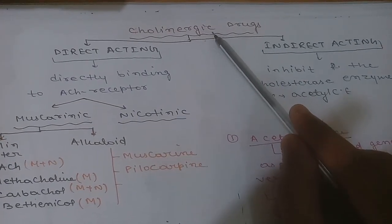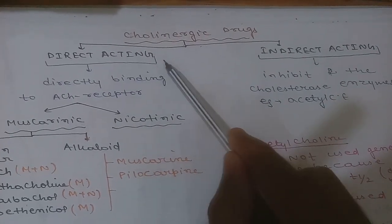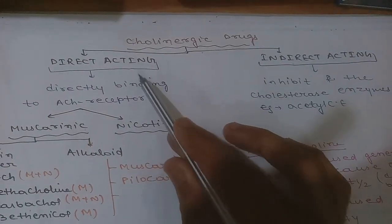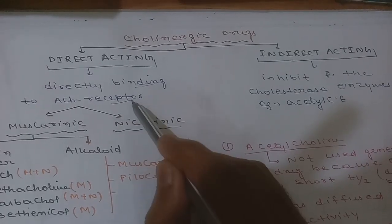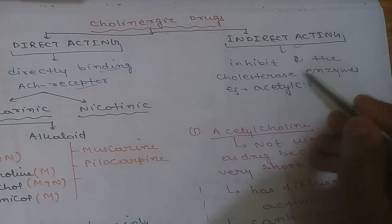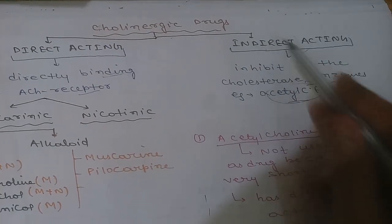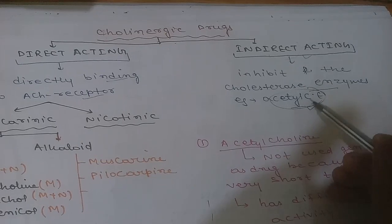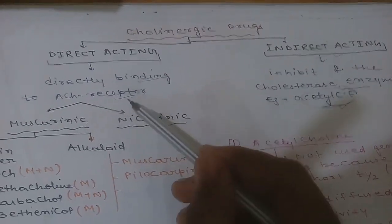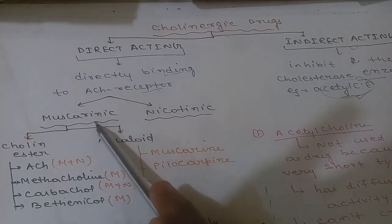Cholinergic drugs are divided into two groups: directly acting cholinergic drugs and indirectly acting cholinergic drugs. Directly acting cholinergic drugs directly bind with acetylcholine receptors, whereas indirectly acting cholinergic drugs inhibit the cholinesterase enzyme, thus increasing cholinergic activity. Directly acting drugs stimulate acetylcholine receptors, which are of two types: muscarinic receptors and nicotinic receptors.